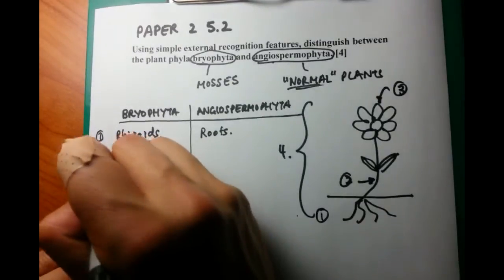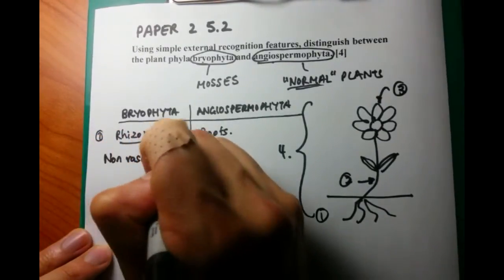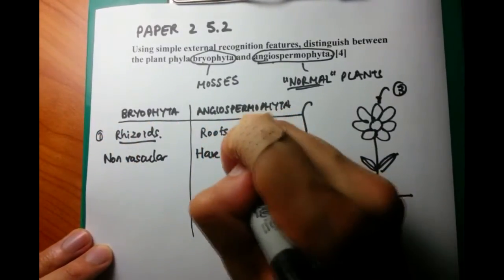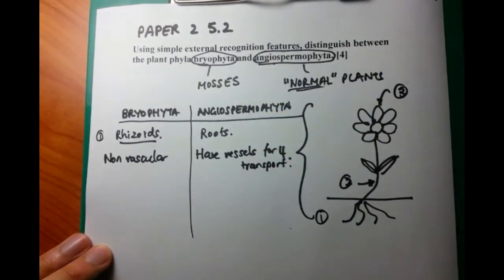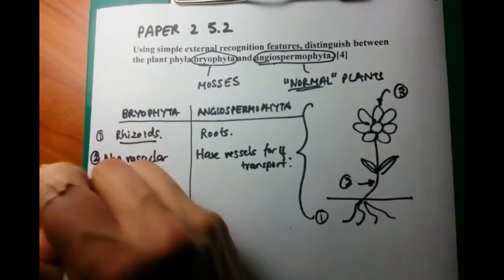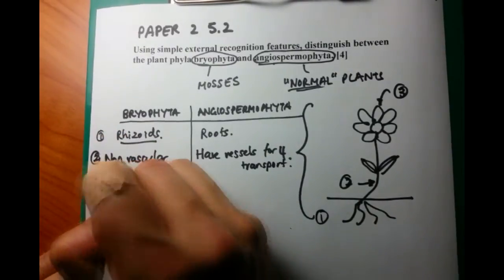Second point we're going to talk about is whether these different plants have blood vessels or not. Well, not blood vessels, but vessels to transport molecules. Bryophyta are non-vascular, so they do not have vessels. Whereas Angiospermophyta do have vessels for transport.